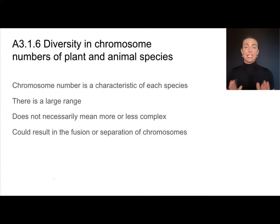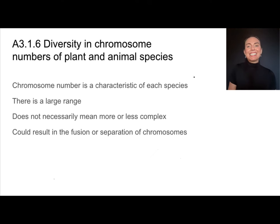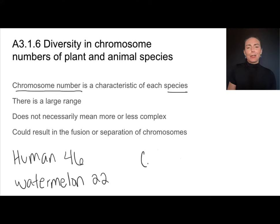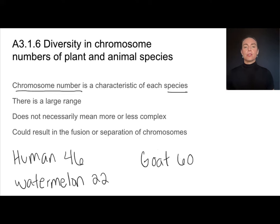So unity and diversity — living things are going to organize their DNA into chromosomes. That's something that we all have in common, but we're all going to have different chromosome numbers, at least in each species. So chromosome number is a defining characteristic of each species. For example, in humans we have 46 chromosomes, in something like a watermelon there are 22 chromosomes, and goats have like 60 chromosomes.